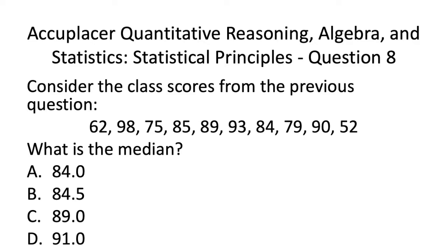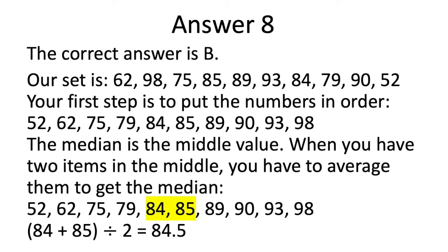Let's have a look at Acuplacer QAS Statistics Practice Test Question 8. The correct answer is B. Here is our set again. Your first step is to put the numbers in order as shown here. The median is the middle value. When you have two items in the middle, you have to average them to get the median. Here we can see that 84 and 85 are in the middle of the set, with four numbers less than these two and four numbers higher. So adding 84 and 85 together and dividing by 2, we get a median of 84.5.